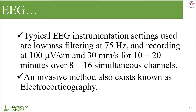The EEG instrumentation settings used include low-pass filtering at 75 Hz, which removes frequencies below 75 Hz, so we are only capturing frequencies above 75 Hz. The signal is recorded at 100 microvolts per centimeter and 30 millimeters per second for 10 to 20 minutes over 8 to 16 simultaneous channels. This means we have placed around 10 channels on a single person's brain and use EEG for 10 to 20 minutes to record stimulus from the brain signals.